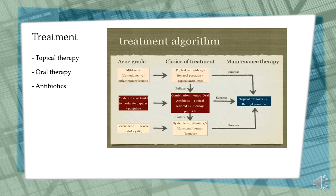This is a treatment line where topical therapy, oral therapy, and antibiotics are used. As we can see, if the condition is new, the use of topical retinoids such as benzoyl peroxide is recommended, and a topical antibiotic can also be included. If successful, continue treatment with topical retinoids only.